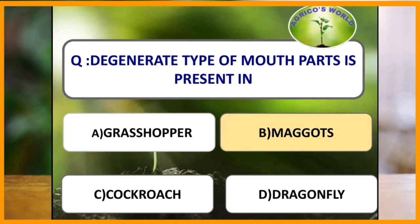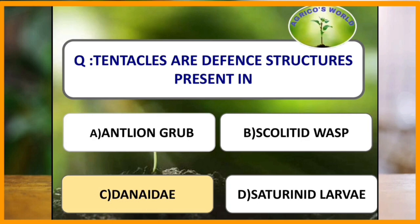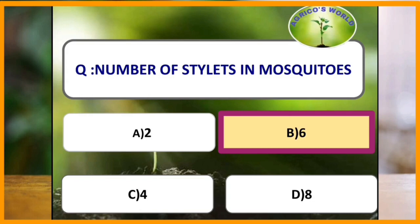Tentacles are different structures present in which of the following? The different structures called tentacles are present in Dianeidae. Number of stylets in mosquitoes: in mosquitoes there are six stylets.